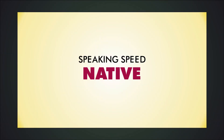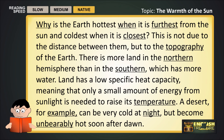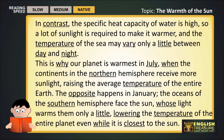We will now say the words again, this time at a native speaker's speed. Why is the earth hottest when it is furthest from the sun, and coldest when it is closest? This is not due to the distance between them, but to the topography of the earth. There is more land in the northern hemisphere than in the southern, which has more water. Land has a low specific heat capacity, meaning that only a small amount of energy from sunlight is needed to raise its temperature. A desert, for example, can be very cold at night, but become unbearably hot soon after dawn. In contrast, the specific heat capacity of water is high, so a lot of sunlight is required to make it warmer, and the temperature of the sea may vary only a little between day and night. This is why our planet is warmest in July, when the continents in the northern hemisphere receive more sunlight, raising the average temperature of the entire earth. The opposite happens in January. The oceans of the southern hemisphere face the sun, whose light warms them only a little, lowering the temperature of the entire planet, even while it is closest to the sun.